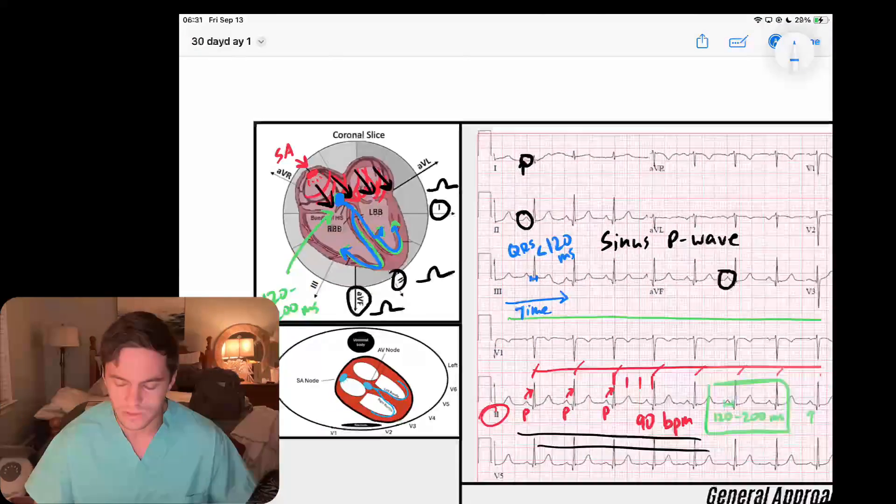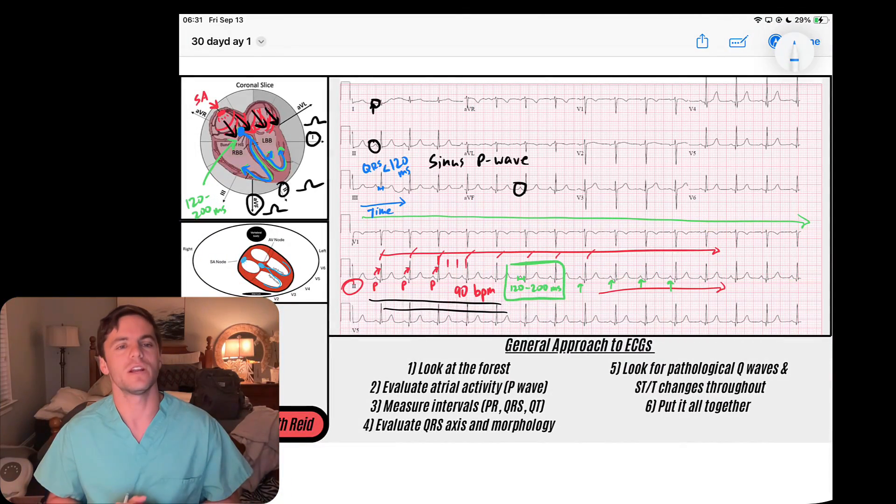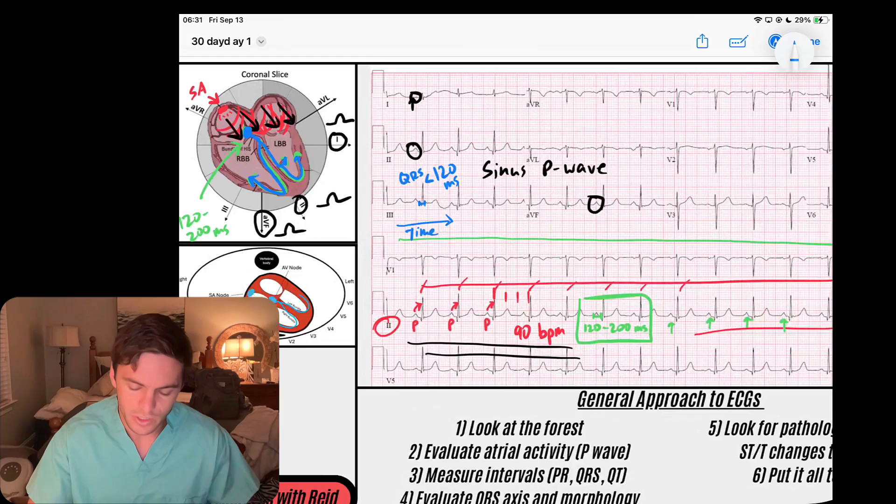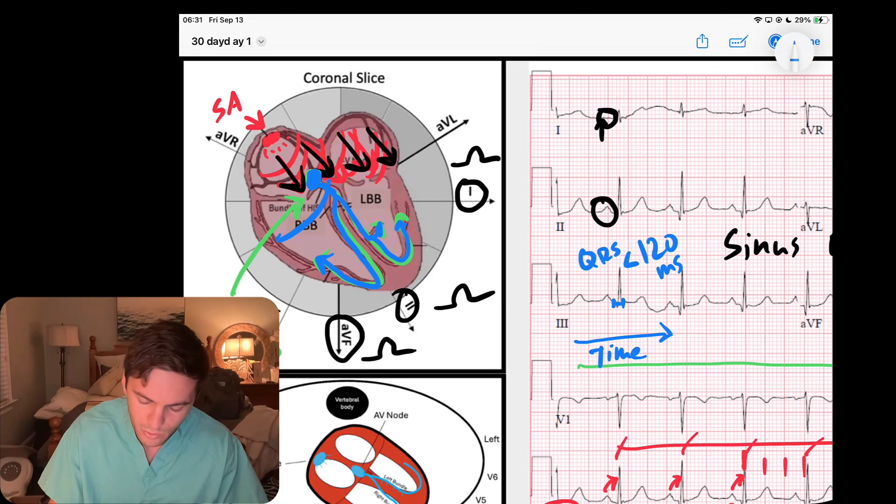Anytime you see a QRS less than 120 milliseconds, it tells you that QRS is being generated from signals coming from the AV junction through the His-Purkinje fibers, and that they're pretty healthy for the most part. That's initially some of my QRS analyzation.